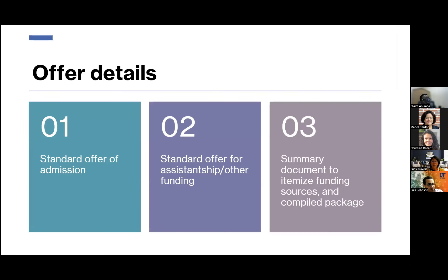You can offer a standard admission with no funding if you want the student but can't provide additional support. You can also offer admission with an assistantship or other funding, outlining what they're entitled to and for how long, provided in writing. If you're offering tuition waiver language, we'd like to see those offer letters, because some agencies interpret 'tuition waiver' as covering all tuition — in-state and out-of-state — so we want to be very clear about what you intend to pay.